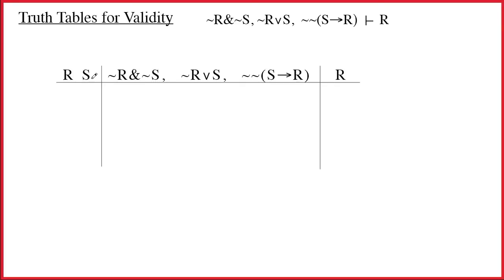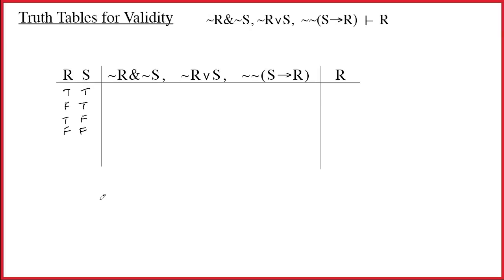When we have two sentence letters, how many rows do we need? The answer is four, because there are four combinations of true and false when you have two sentence letters. The easy way to generate these: true, false, true, false in the first column, and true, true, false, false in the second column — two trues at the top, two falses at the bottom, and the combinations in the middle.